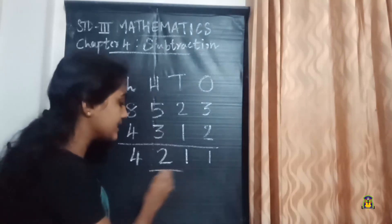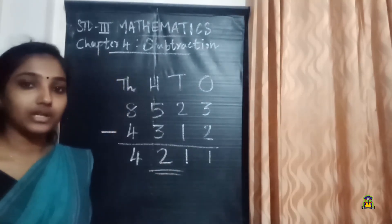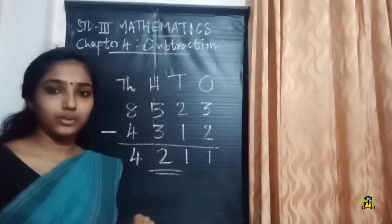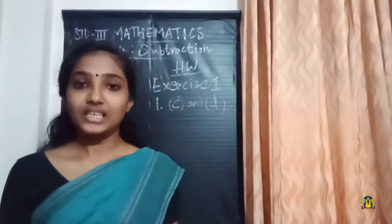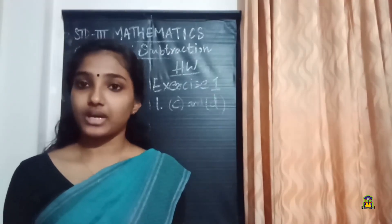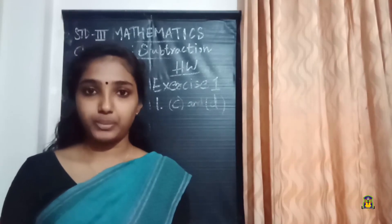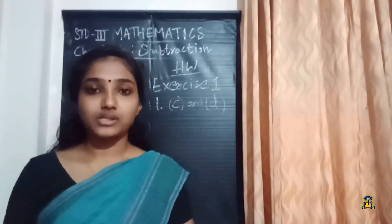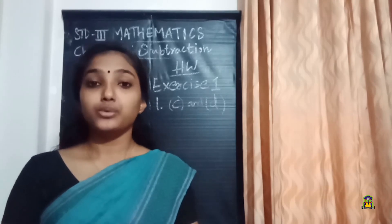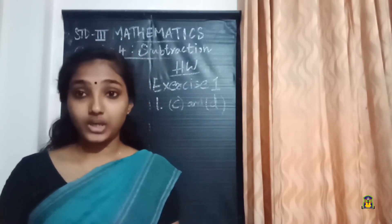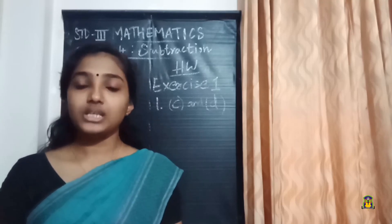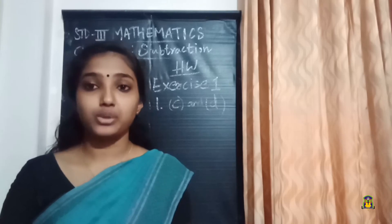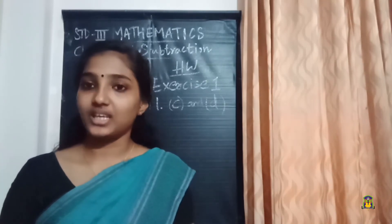The answer we get in subtraction is called the difference, so here the difference is 4211. Today in this class we studied the subtraction of four-digit numbers without regrouping. For homework, please do Exercise 1, question number 1, parts C and D. Thank you.